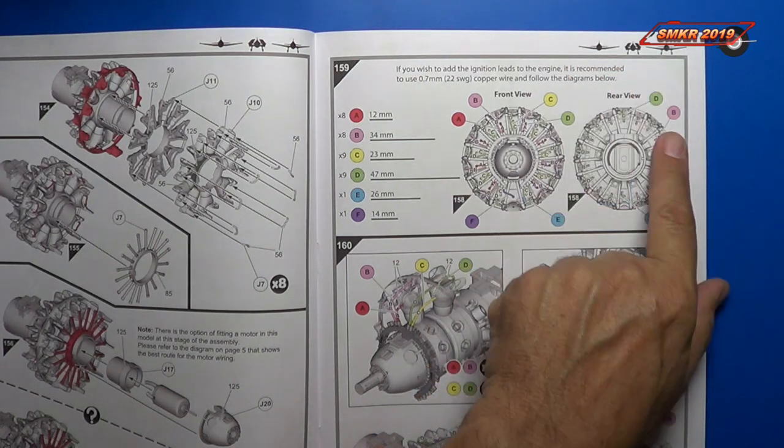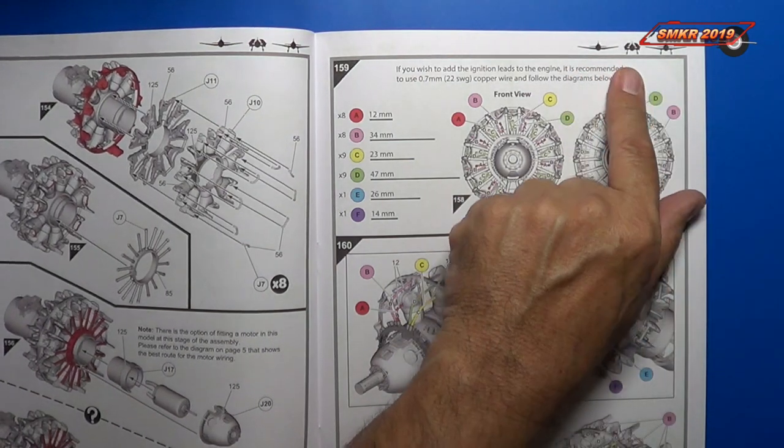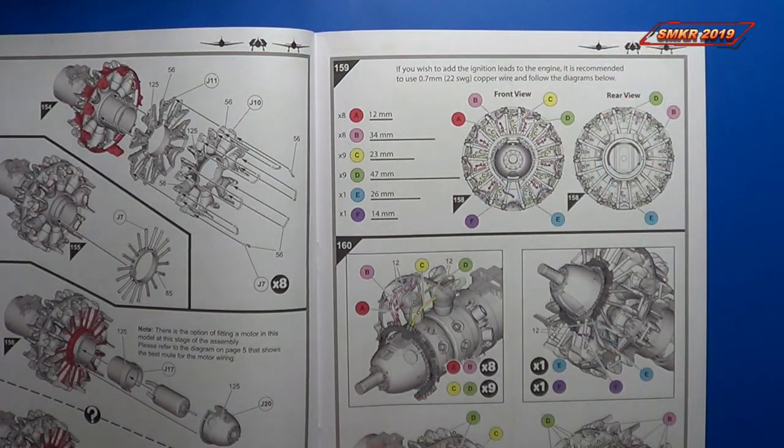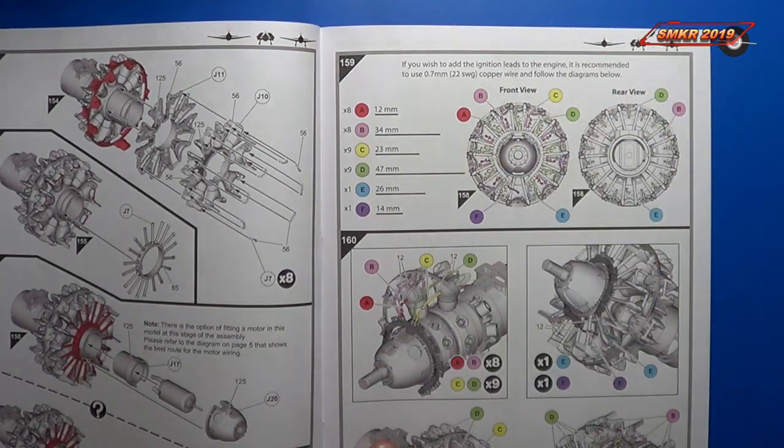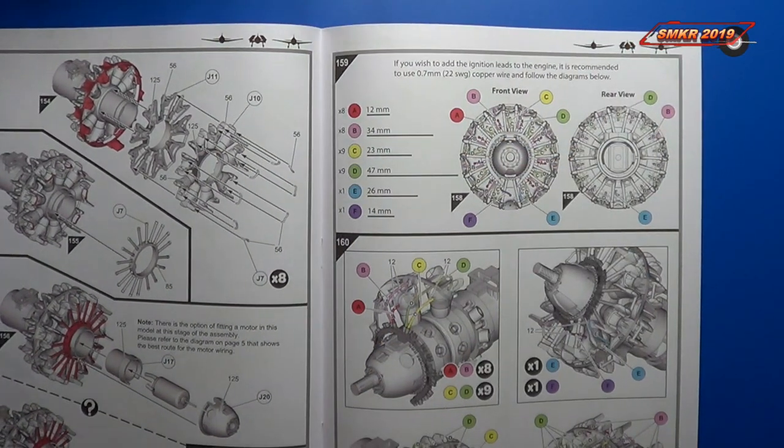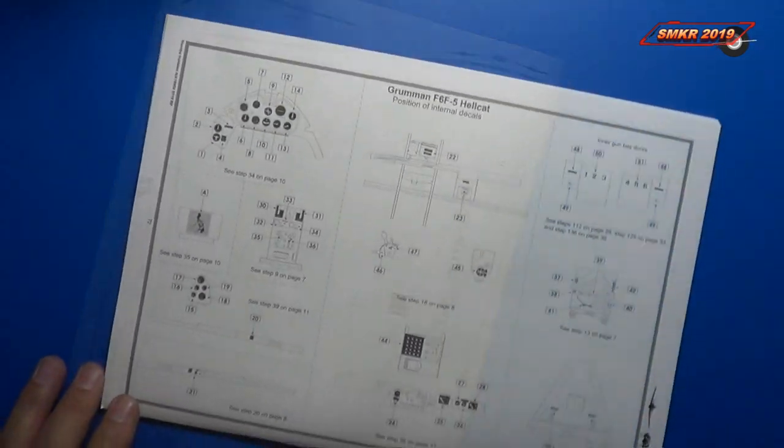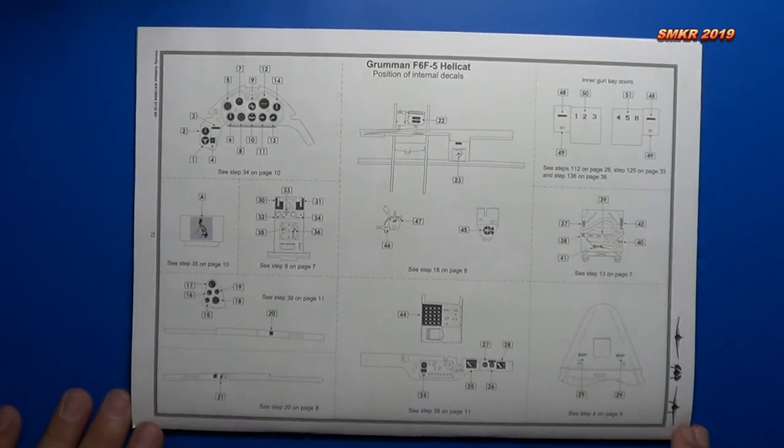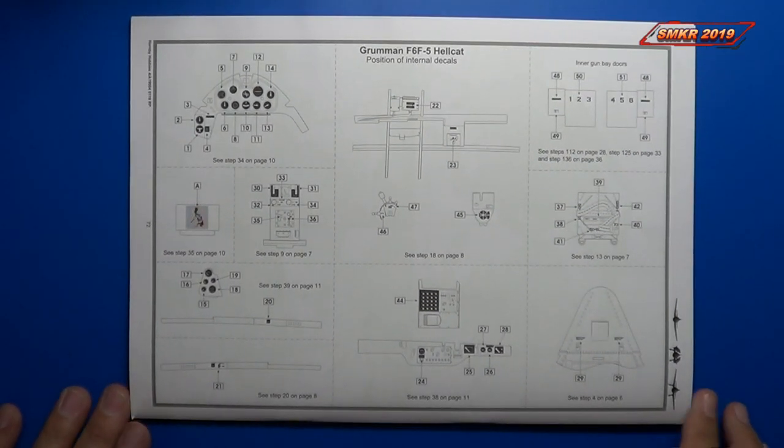Also on top, you can build it three different ways: gear down, gear up, wing folded, wings out. So watch for that on the top of the instructions, and you can decide how you want to build this. And lastly, they do give us a position of the internal decals for the instrument panels.